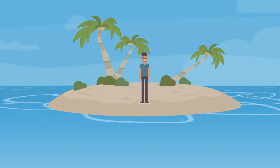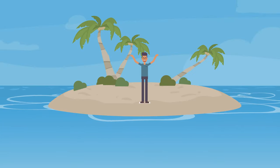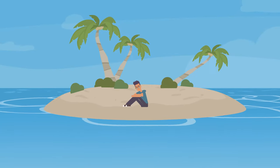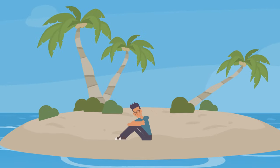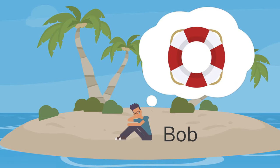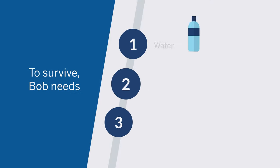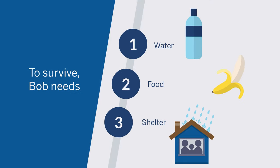Imagine, for example, if a single person were stranded on a deserted island. For this person — let's call him Bob — the top priority is obvious: survival. He needs water, food, and shelter.